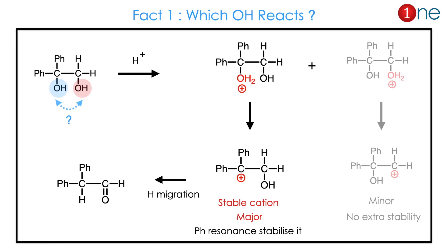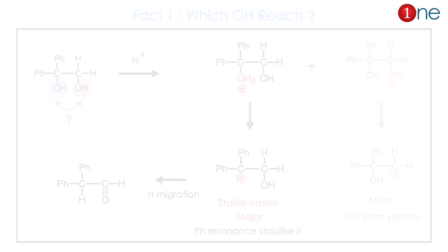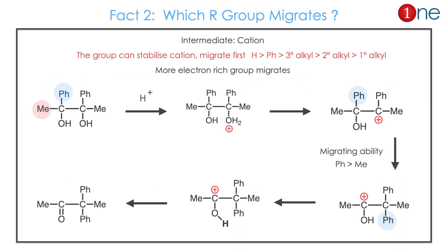Let us see the controlling facts. Suppose you have an asymmetrical diol with different OH groups — which OH reacts? The OH which forms the more stable cation always reacts. If you have an OH near hydrogen and an OH near phenyl, the OH near hydrogen forms a minor cation, while OH near phenyl forms a major cation because phenyl resonance stabilizes it. So hydrogen migration occurs — that is the major product.